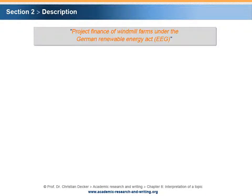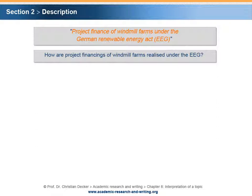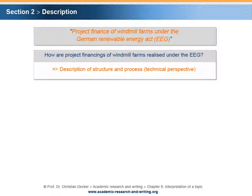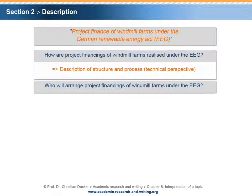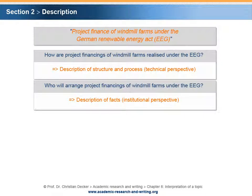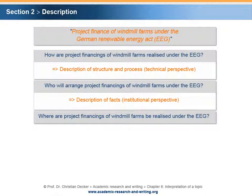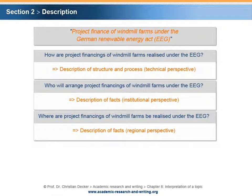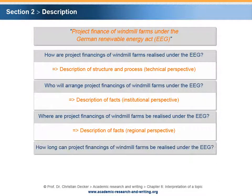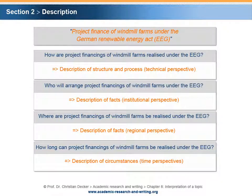If we have just a topic without a problem setting, and this topic would be project finance of windmill farms under the Renewable Energy Act, we could raise the following questions. How are project financings of windmill farms realized under the EEG? This implies a description of structure and process from a technical perspective. Who will arrange project financings of windmill farms under the EEG? This implies a description of facts from an institutional perspective. When or how long can project financings of windmill farms be realized under the EEG? This implies a description of circumstances from a time perspective.